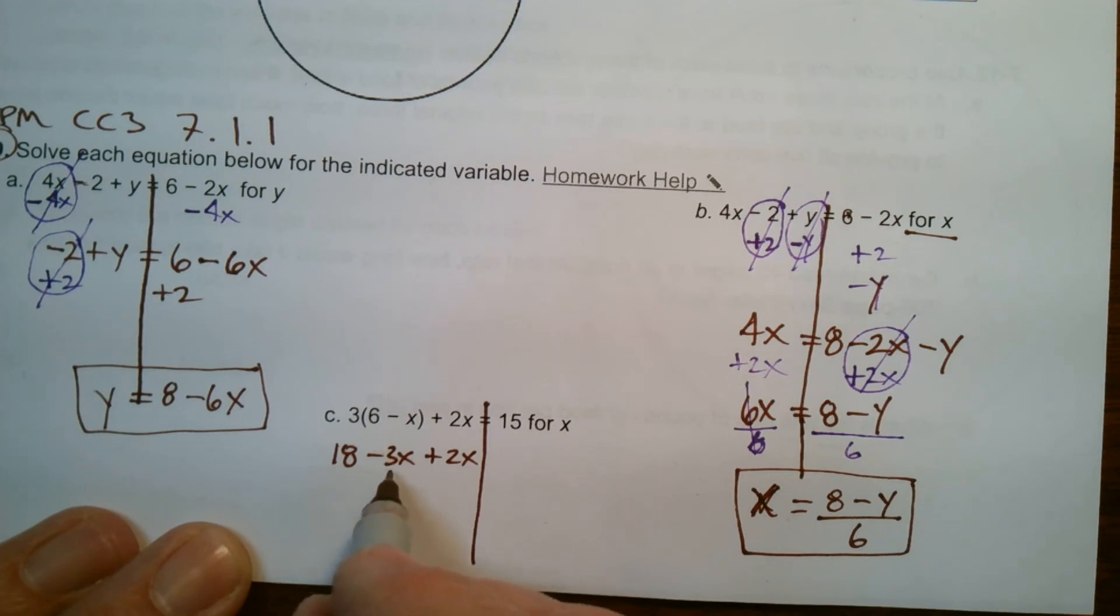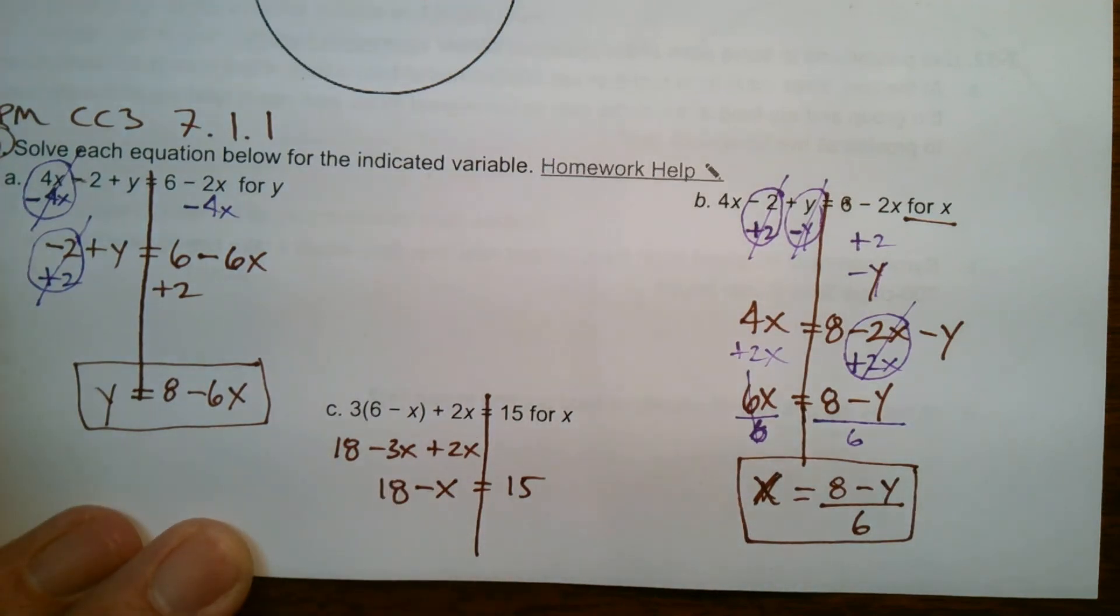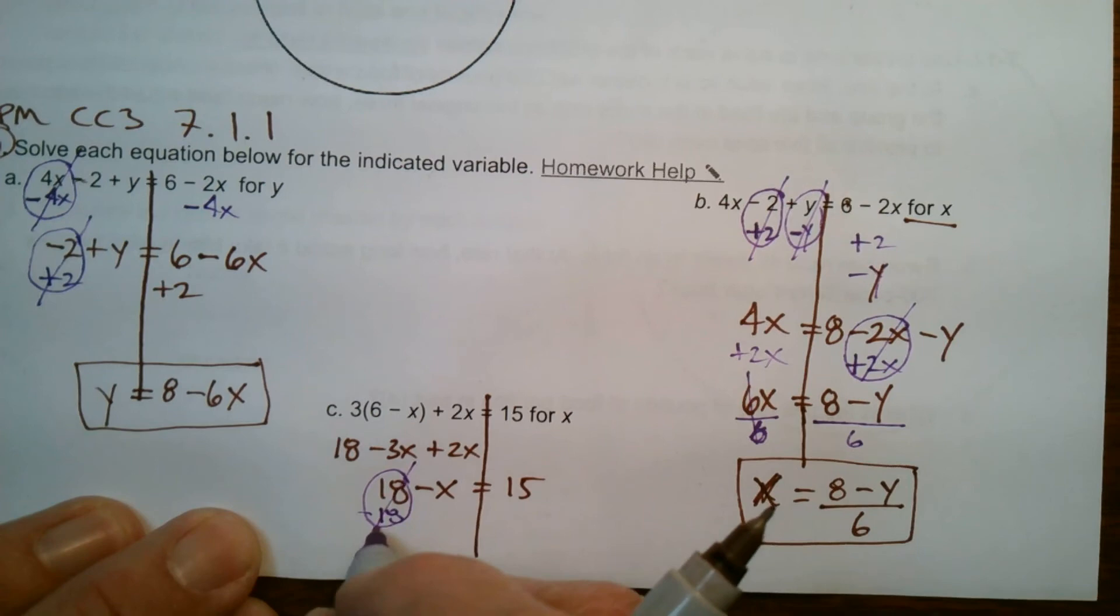Negative, don't forget, that's a negative. Negative 3x, positive 2x becomes a negative 1x. Okay. So now I have 18 minus x equals 15. Okay. So I'm going to subtract. I want to get all my x's alone. I'm going to subtract 18 from both sides to make that 18 become a 0.